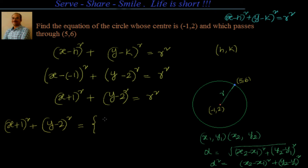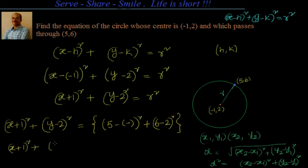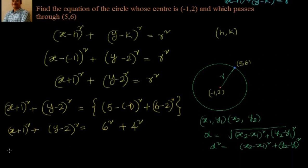So let me write it as 5 minus of minus 1 whole square plus 6 minus 2 whole square. If we simplify that, this is equal to x plus 1 whole square plus y minus 2 whole square equal to — 5 minus of minus 1 is equal to 5 plus 1 — so I can write it as 6 square plus 4 square, which is nothing but x plus 1 whole square plus y minus 2 whole square equal to 52.